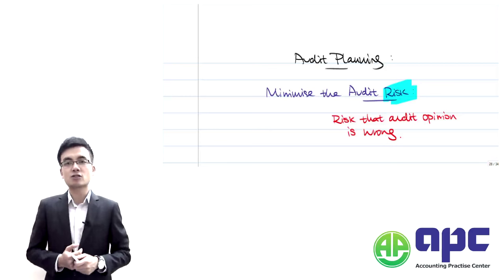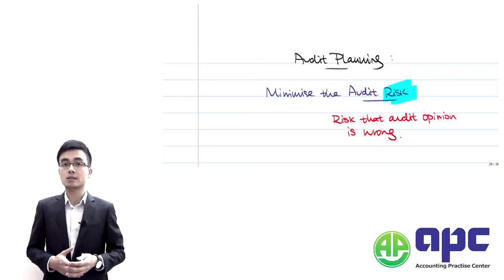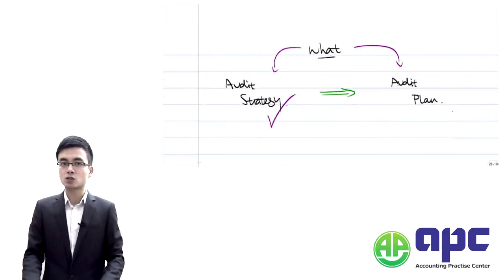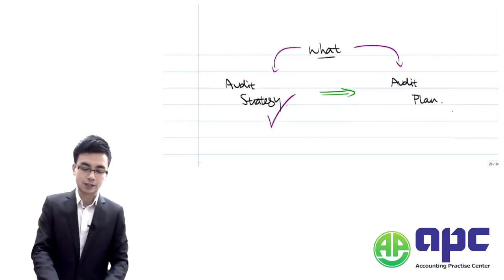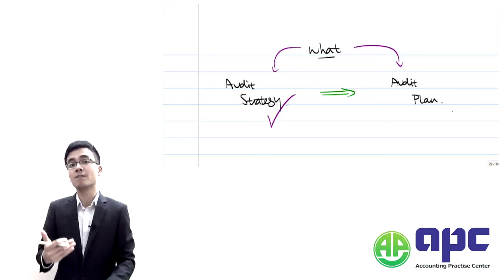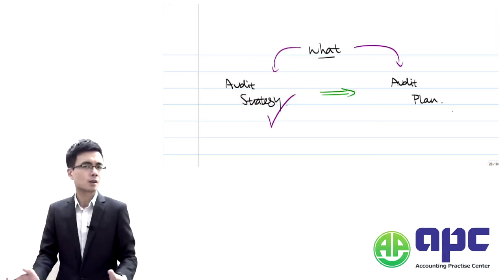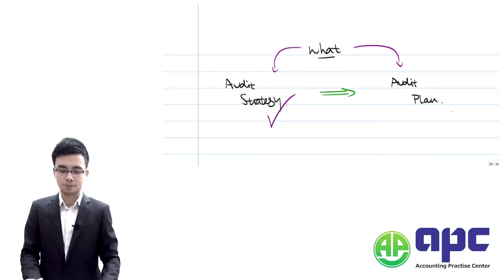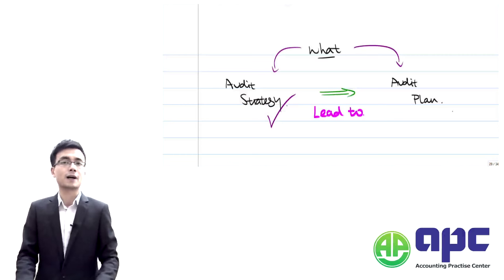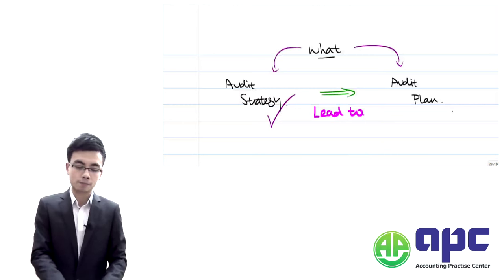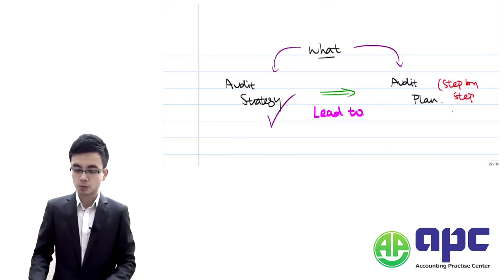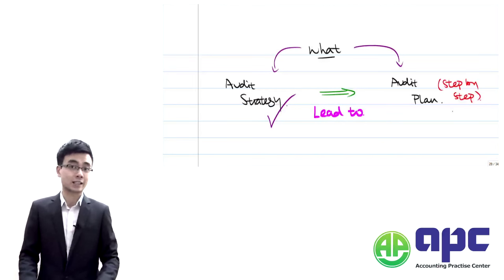Within stage number 2, when planning your audit, there are two things you need to do. The first is setting up the audit strategy, which tells you the scope, timing, nature, and direction of the audit. That audit strategy will then lead to the detailed audit plan, which tells the auditor step by step how to do the audit in later stages.